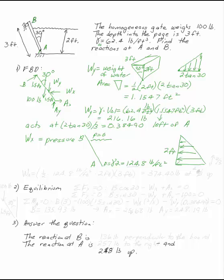So the horizontal pressure from the water is one half, it's the area of that triangle, one half 124.8 pounds per foot squared, times 2 feet, that's the area of your triangle, times the depth into the page, 3 feet. That's 374.40 pounds.